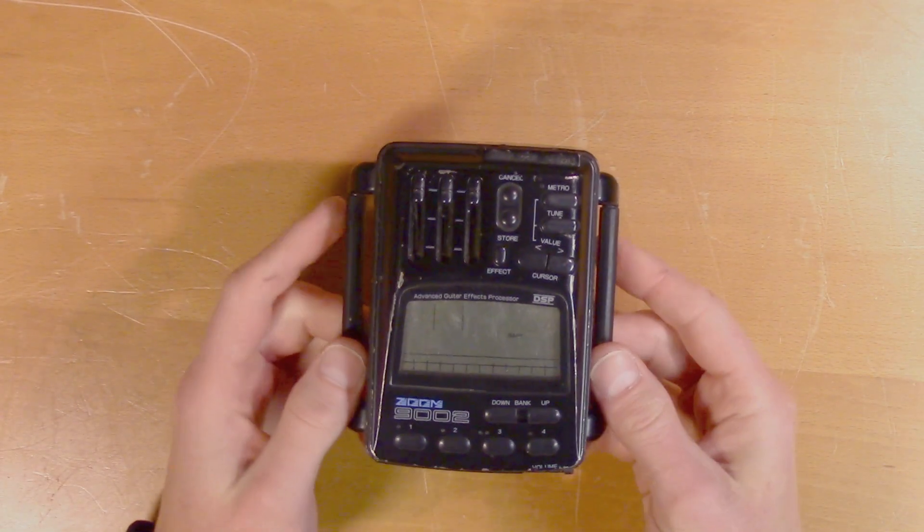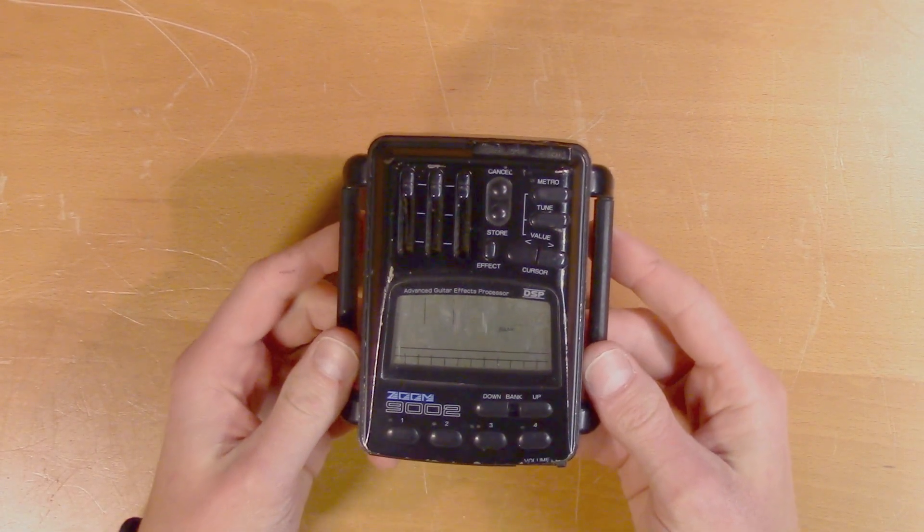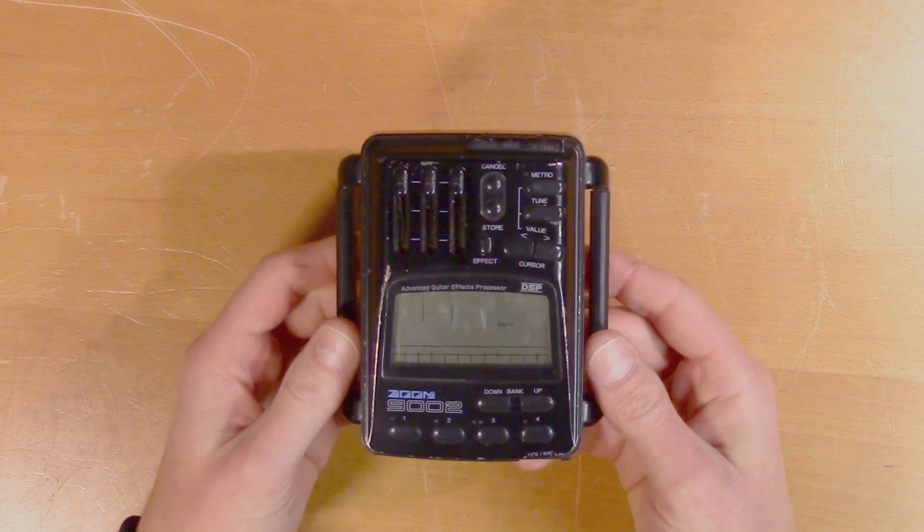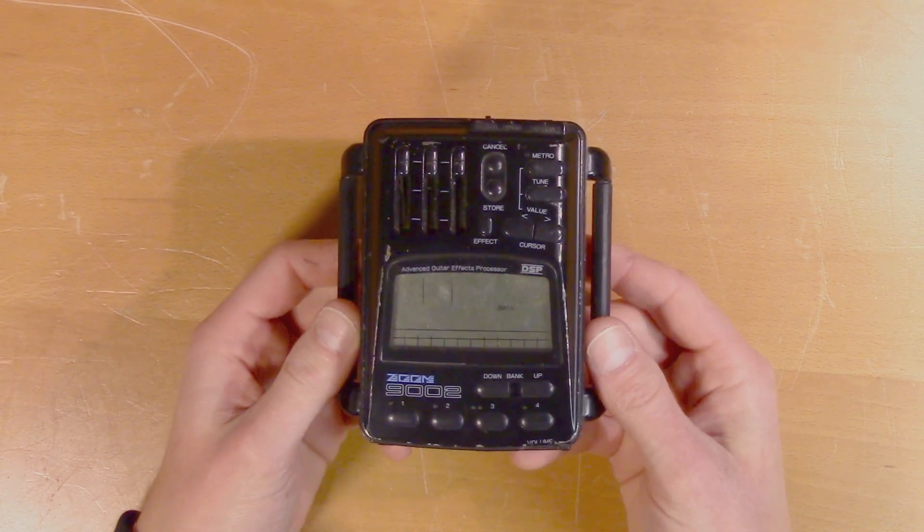This is the Zoom 9202. It's a digital multi-effects processor released in 1990, and it's the first product ever released by the Zoom Corporation.